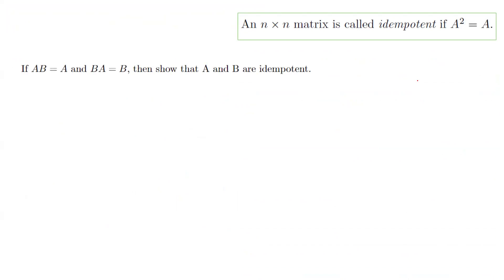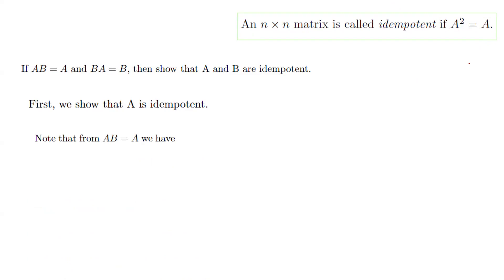Suppose A times B equals A and B times A equals B. We want to show that A and B are idempotent. An n by n matrix is idempotent if A squared equals A. To show A is idempotent: since AB equals A, multiply both sides on the right by A to get AB times A equals A times A, which is A squared.